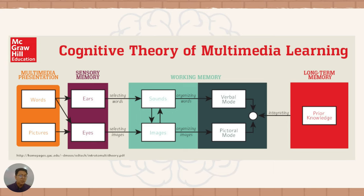In our CTML, as you can see here, we have the multimedia presentation through words and pictures, which is absorbed through our senses — our sensory memory through the ears and eyes. For pictures, it moves through the eyes; for words, we have the ears and eyes as well. Selected words and selected images then move to our sensory memory, in which they will be organized into words and images.